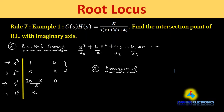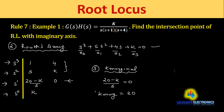Step 3: find k_marginal by making one row of the Routh array a row of zeros (except the s⁰ row). We set the s¹ row element (20 − k)/5 = 0, which gives k_marginal = 20.